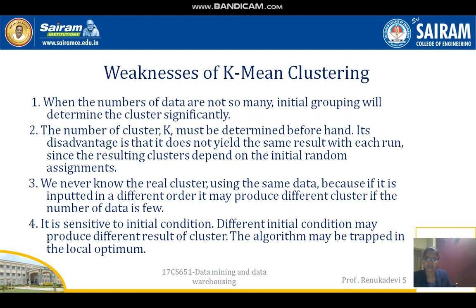Regarding additional issues in K-means: there are two strategies that decrease total SSE by increasing the number of clusters. The first is to split a cluster — the cluster with the largest SSE is usually chosen, or we could split the cluster with the largest dataset. A new cluster centroid is introduced; often the point farthest from any cluster centroid is chosen. Another approach is to choose randomly from all points or from the points with the highest SSE.